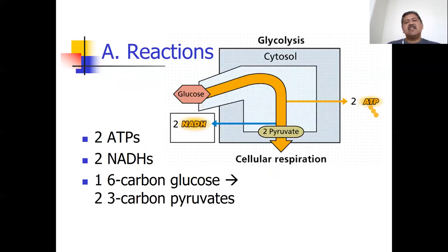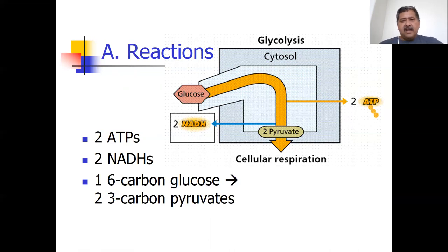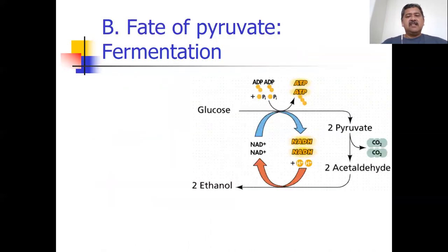Alright, here's your scorecard. You need to know that there are two ATPs, two NADHs, and that one glucose molecule gets cut into two three-carbon molecules called pyruvate by the time we're done with glycolysis.